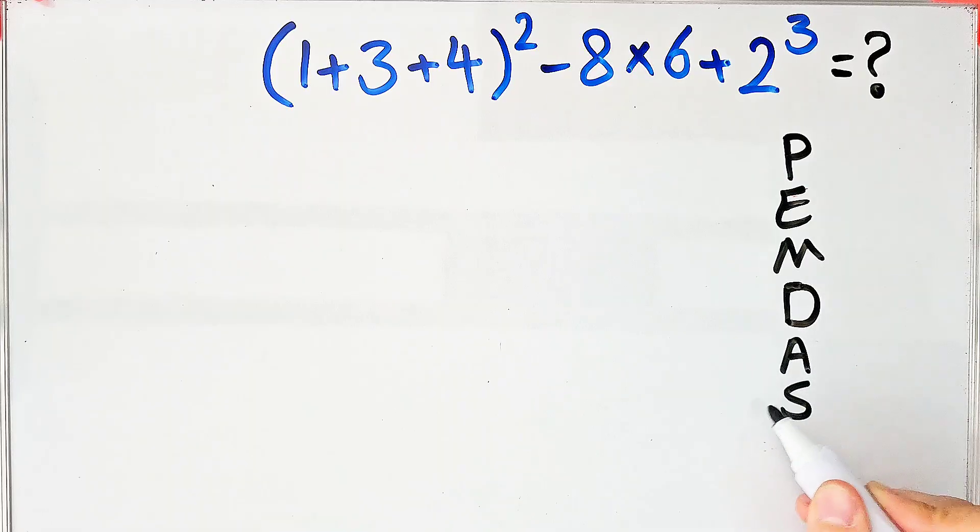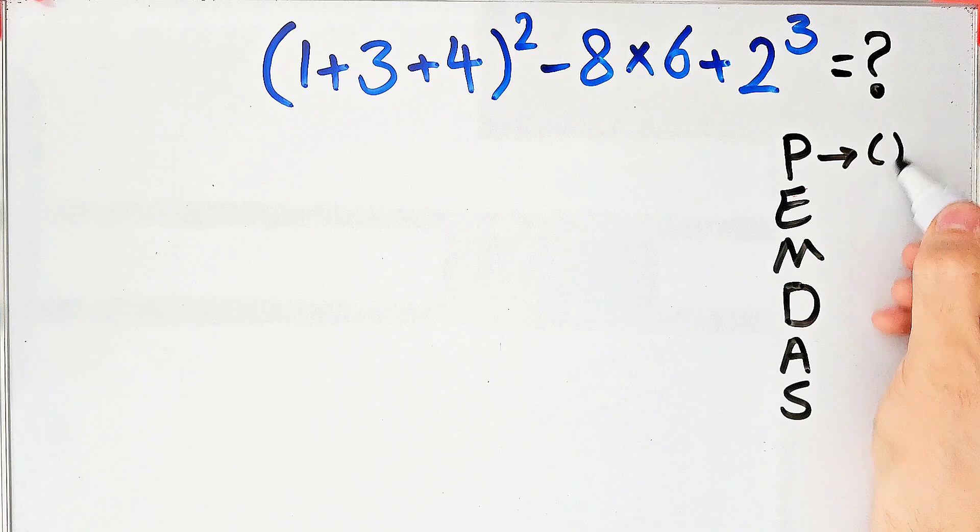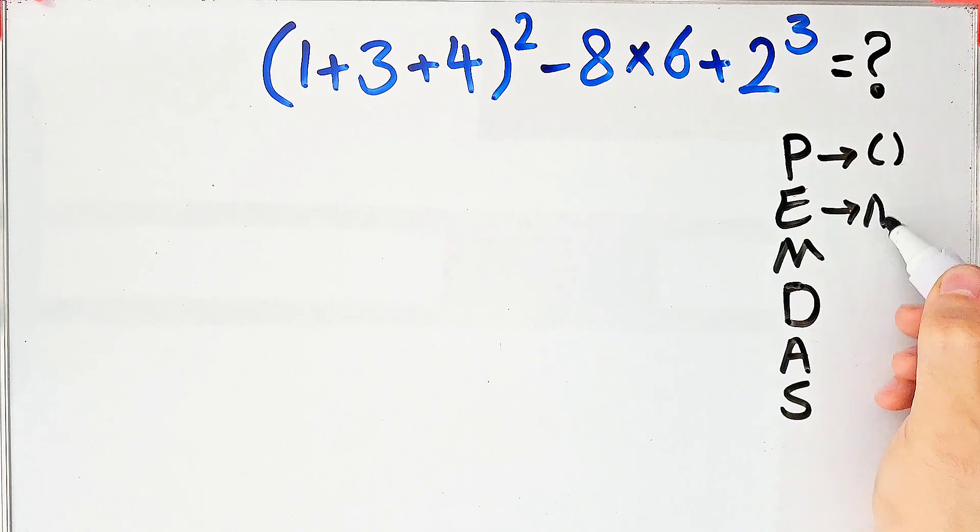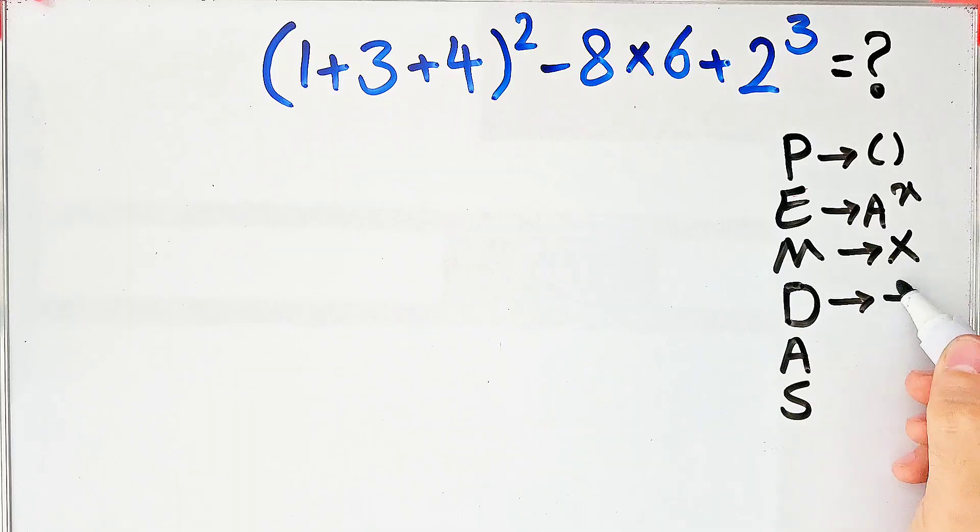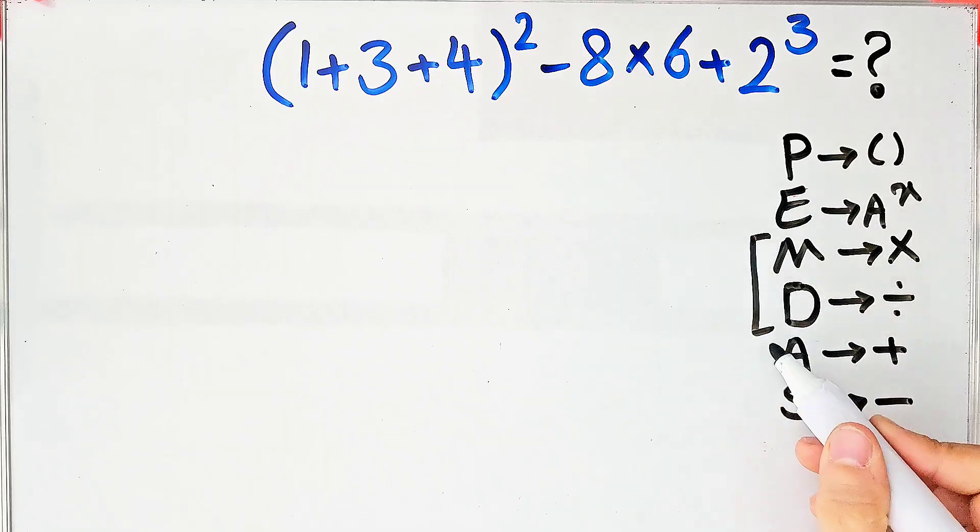In this rule P stands for parentheses, E stands for exponent, M stands for multiplication, D stands for division, A stands for addition and S stands for subtraction. Multiplication and division have the same level of priority, also addition and subtraction have the same priority.